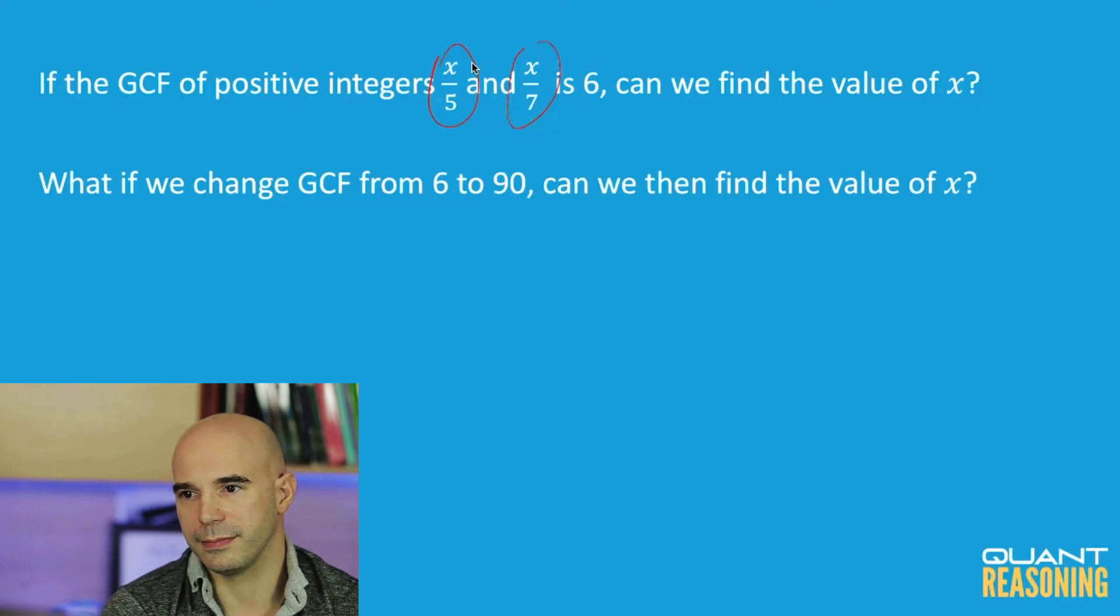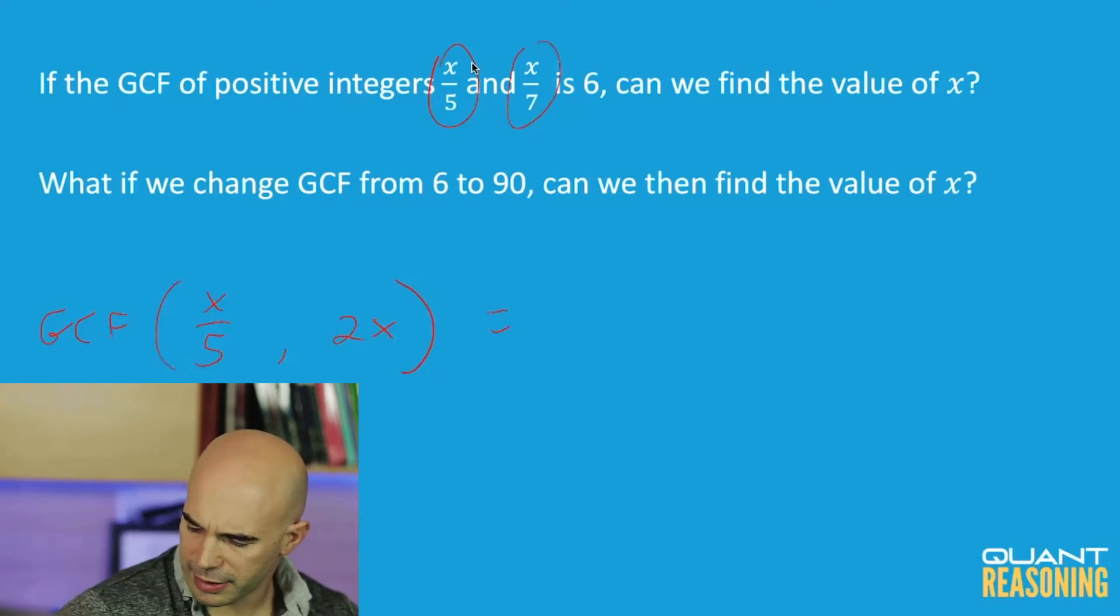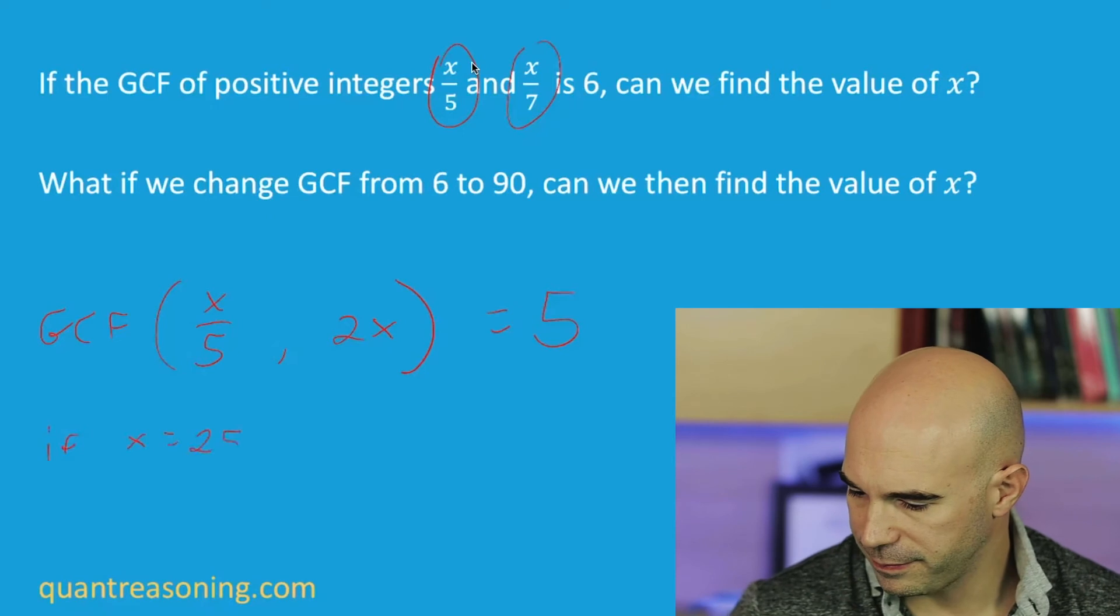I was wondering, what if we change x upon 7 to 2x? Can we then find? So what if we have x over 5 and 2x? Yeah. And we're saying the GCF of these is, let's say, doesn't have to be even, because all I can say about x here is that x is a multiple of 5, but x could be odd. Here's an example. What if the GCF of those things is 5? That's possible. The GCF of those things would be 5 if x is 25. Right, if x is 25, then x over 5 is 5 and 2x is 50. And what's the GCF of 5 and 50? 5.